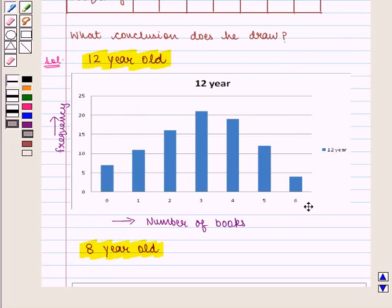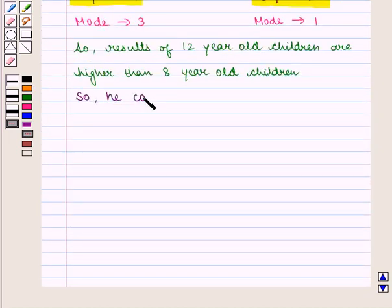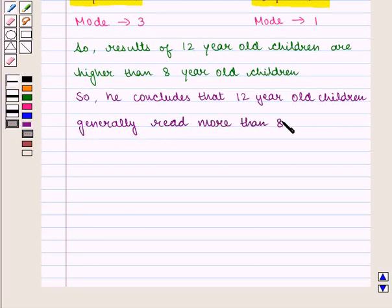We also see that the data values for 12 year old children are widely spread but mostly between 2 to 4, and most of the data values for 8 year old children are clustered between 0 to 2. So he concludes that 12 year old children generally read more than 8 year old children. This is the required answer.